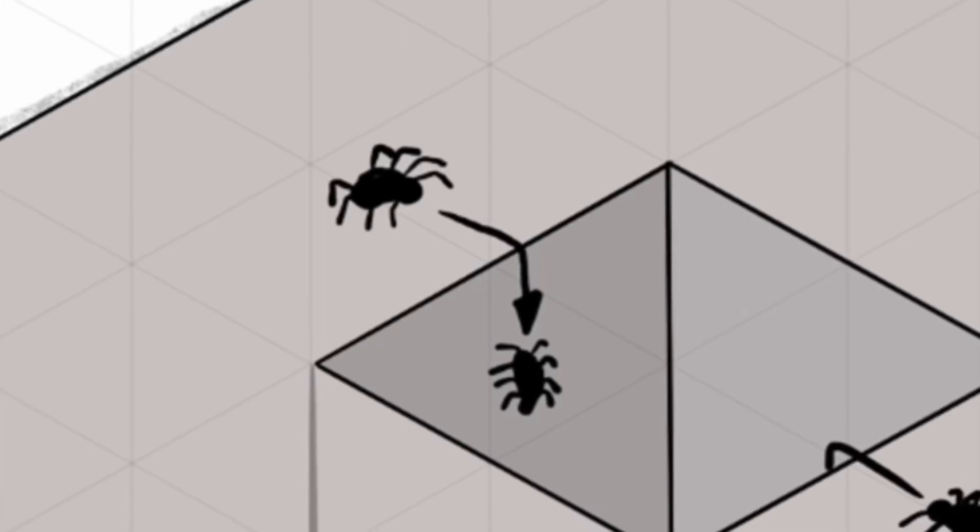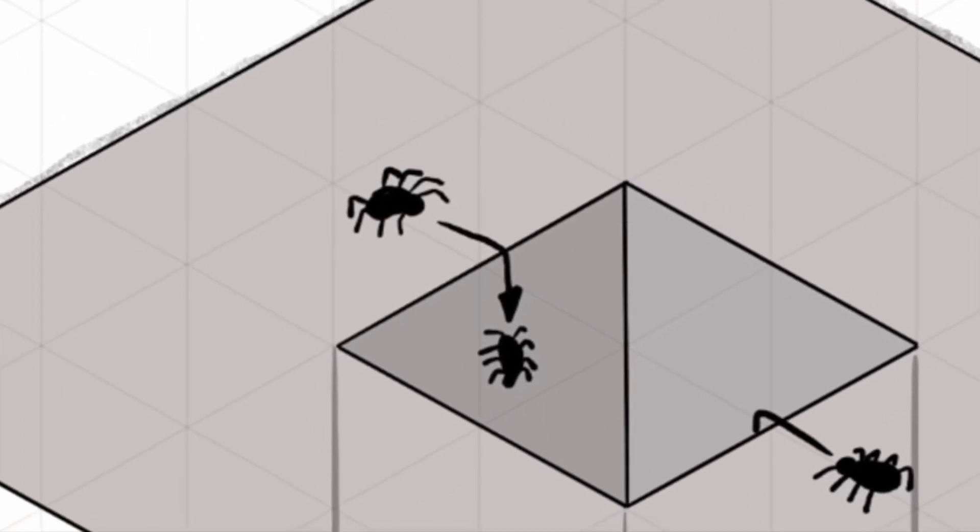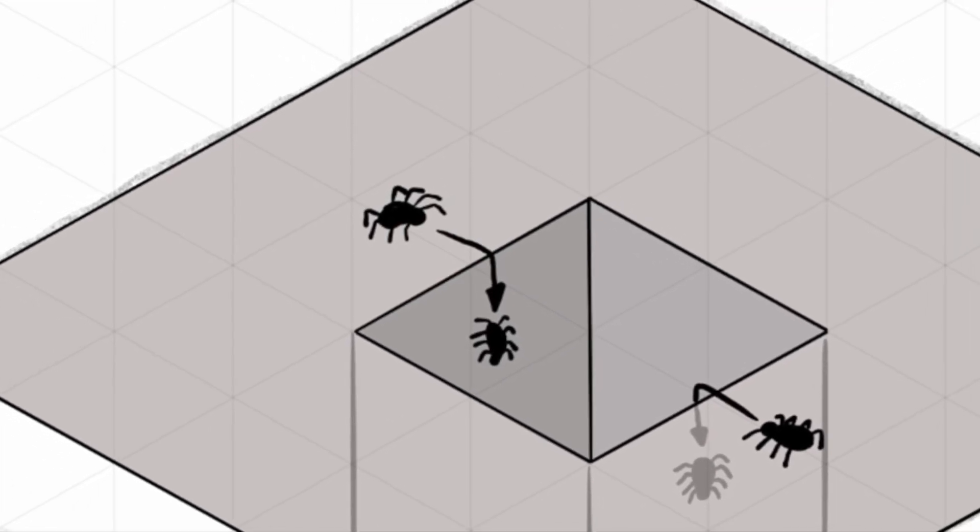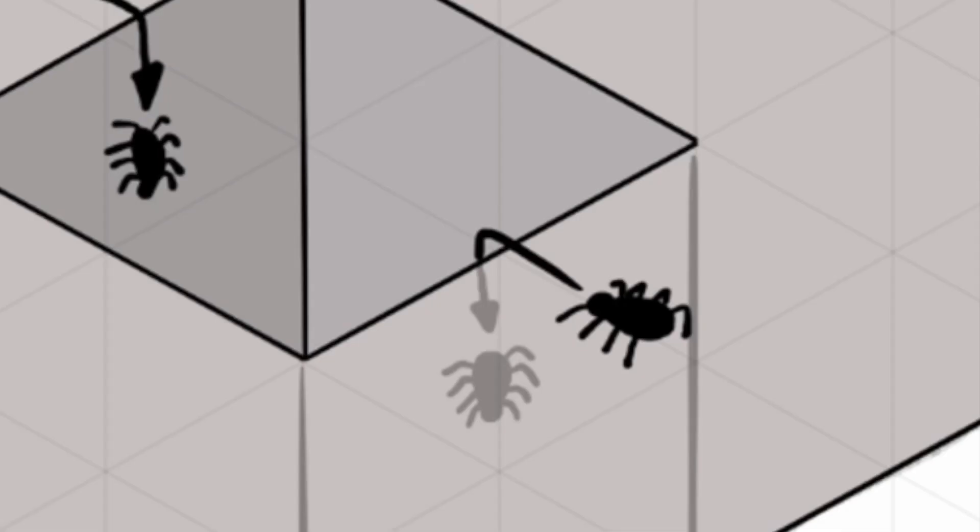To help illustrate this we can use the spider analogy. Imagine a spider walking along the edges of this cube. If the spider crosses from one face of the cube to another and you can still see it, the edge it crossed remains a thin line.